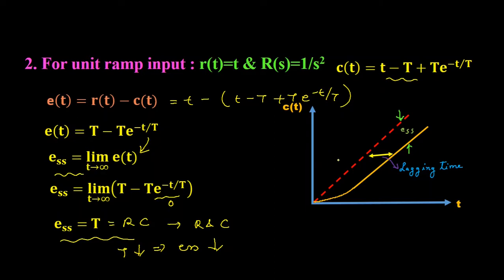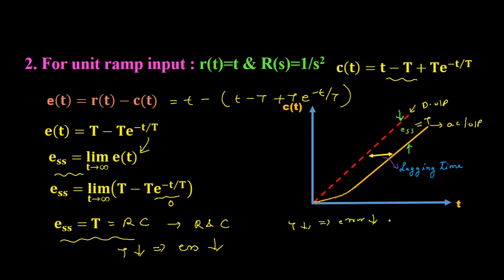In the graph, this is the desired output and this is the actual output. We can see that a constant error of T exists between the desired and actual output. During steady state, the output velocity matches the input velocity, but the output lags behind the input by time T, and a positional error of T units exists. Lower the time constant, lesser will be the positional error and the time lag between input and output.